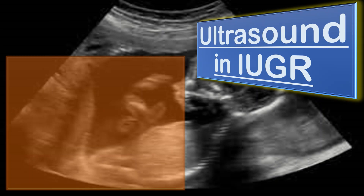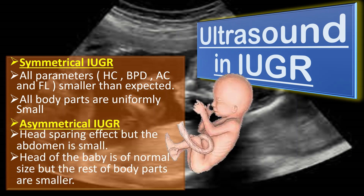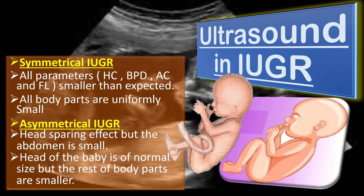Now let us talk about the ultrasound findings in IUGR. In symmetrical IUGR, all the parameters like head circumference, biparietal diameter, abdominal circumference, and femur length are smaller than expected — all body parts are uniformly small. Whereas in asymmetrical IUGR, there is a head-sparing effect; the head of the baby is of normal size but the rest of the body parts are smaller.